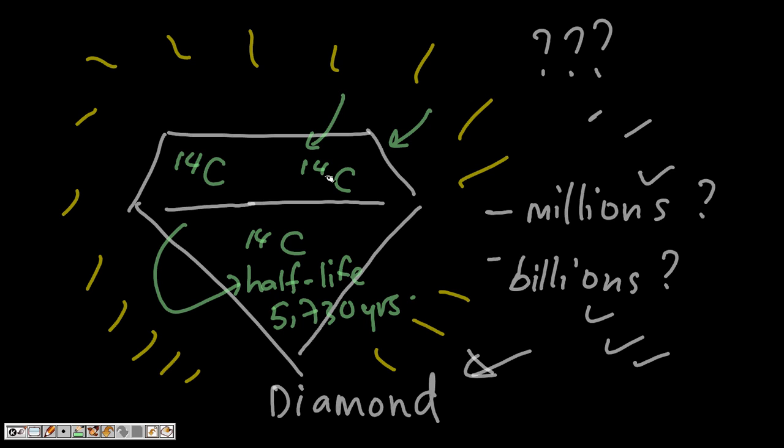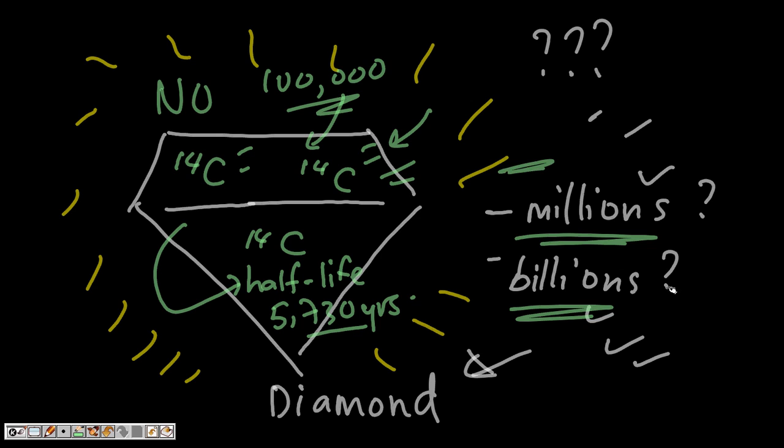Since the half-life of carbon-14 is relatively short - that is, 5,730 years - there should be no detectable carbon-14 left after about a hundred thousand years. So if we can still find traces of carbon-14 in diamonds today, how can the rock layers of the diamond itself be millions and billions of years old?